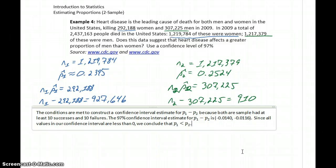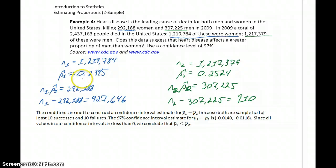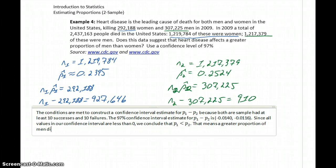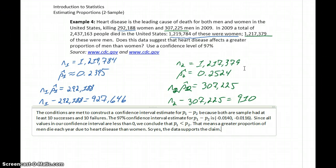In the context of our data, our first sample proportion represented the proportion of women who died due to heart disease, and our second represented the proportion of men. Since P1 is less than P2, that means a greater proportion of men die each year due to heart disease than women. The data supports the claim made in the problem — heart disease affects a greater proportion of men than women, since all values in our confidence interval were less than zero.